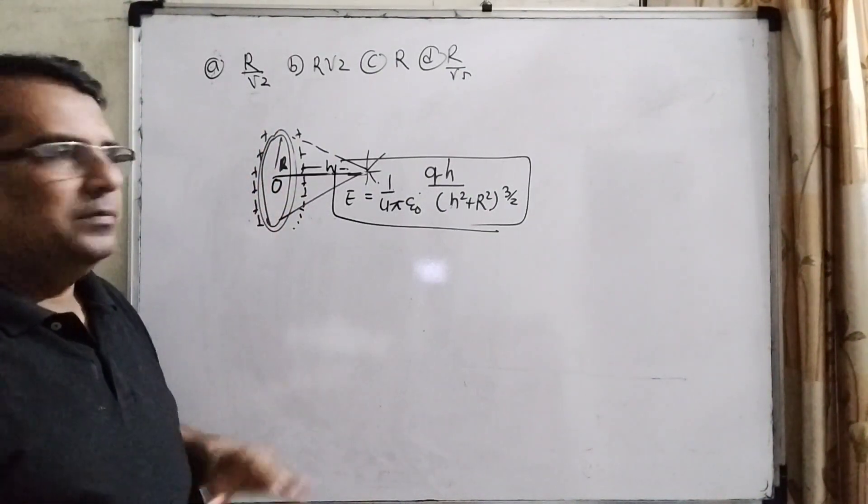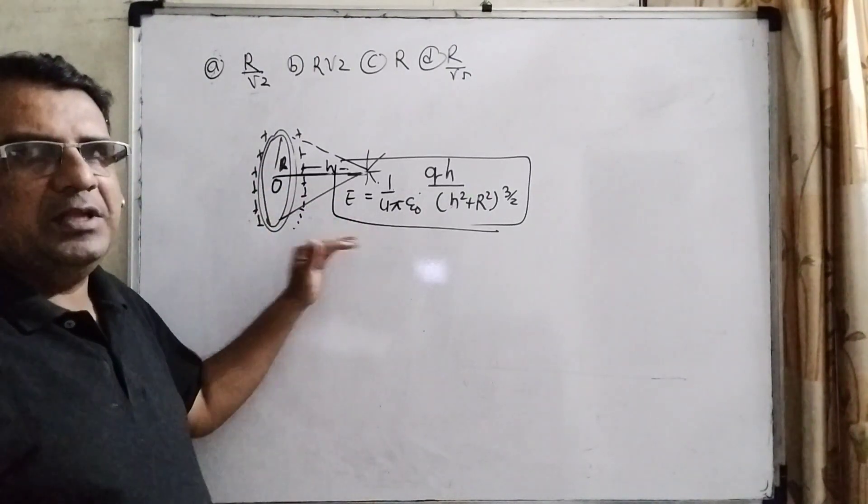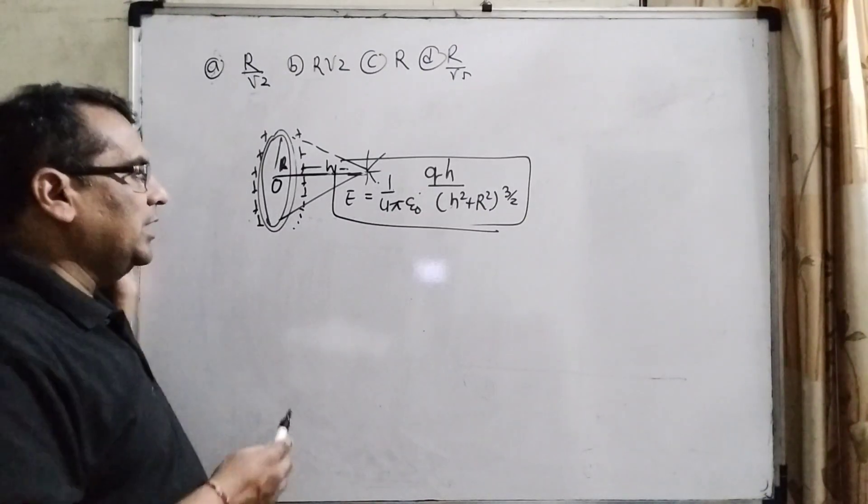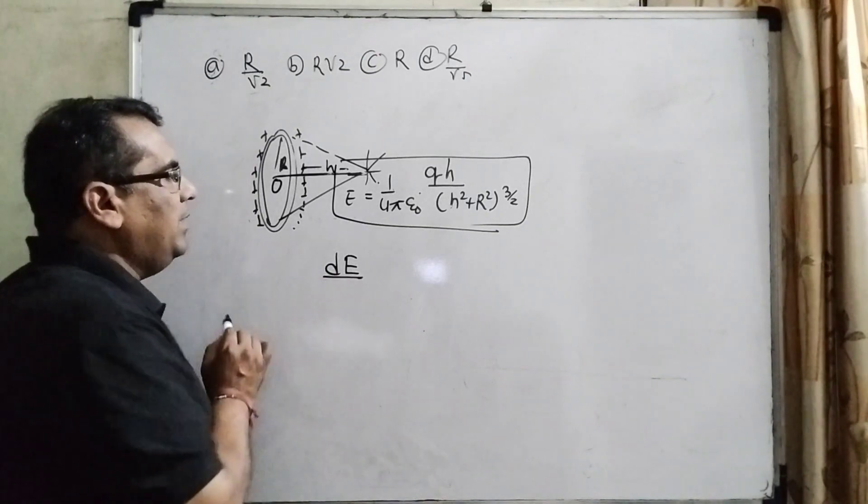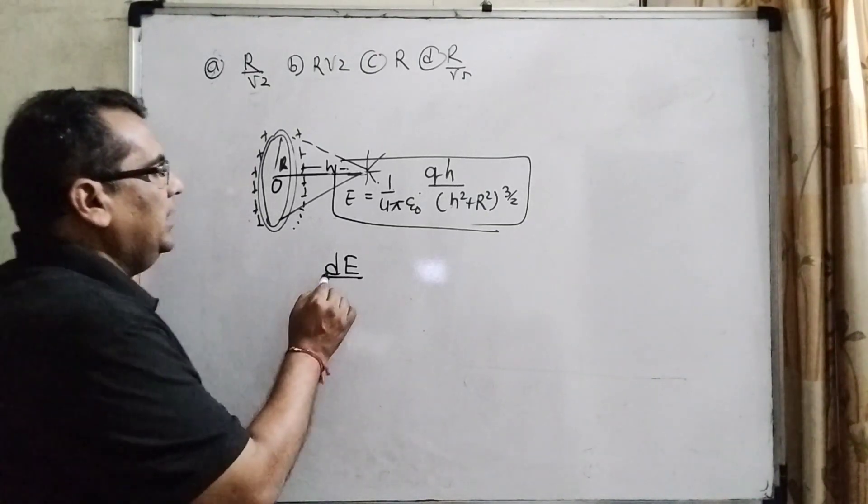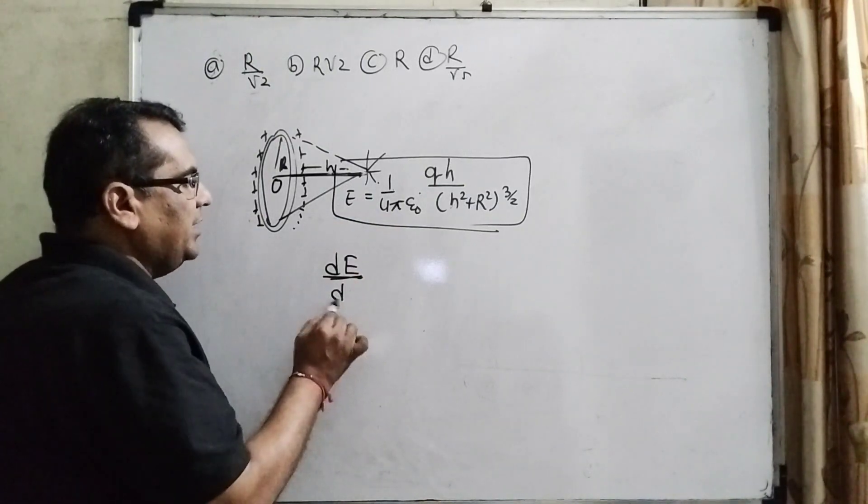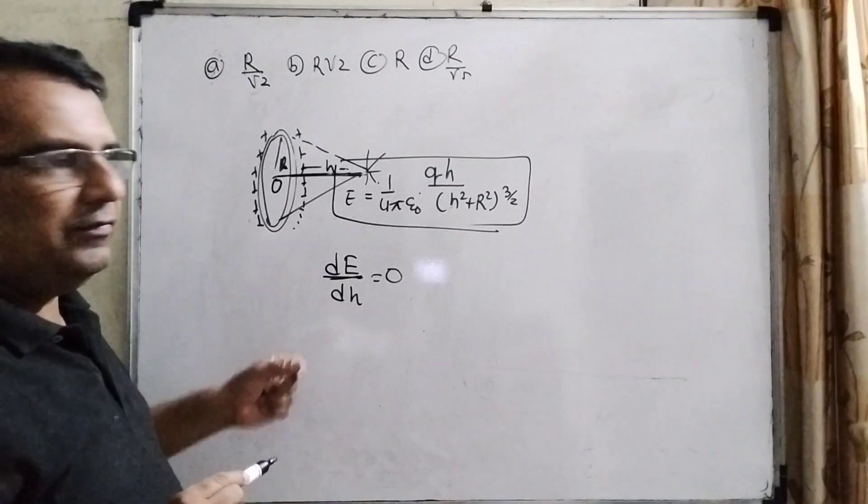This question is totally based on mathematics. Which concept do we have to use in mathematics? Maxima and minima. You know that very well. What is the condition for maxima? Here we have to find out the maximum electric field at the distance h, which means dE/dh can be taken as 0. Okay, and then we can find the value of h.